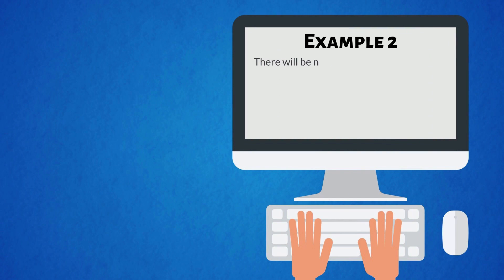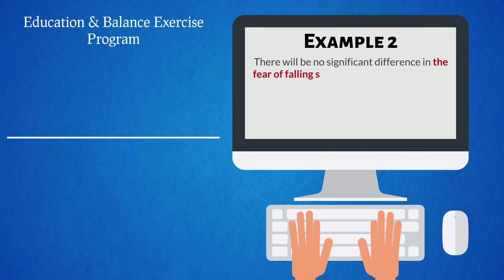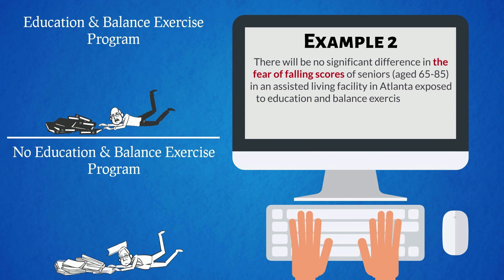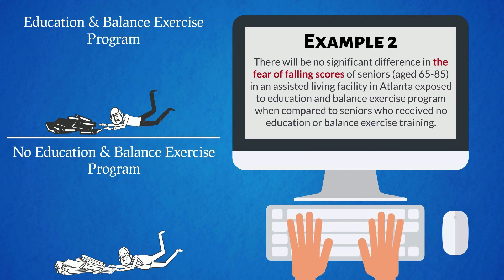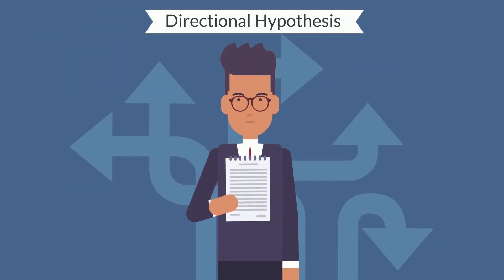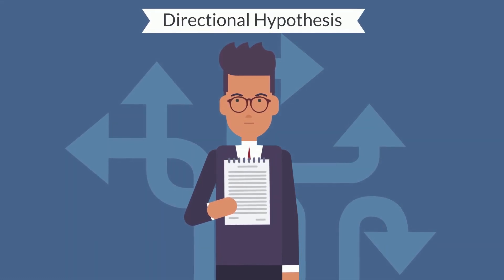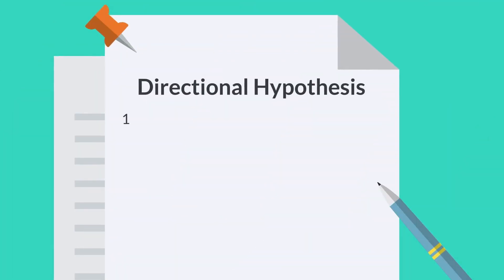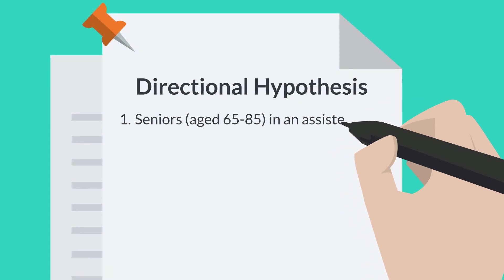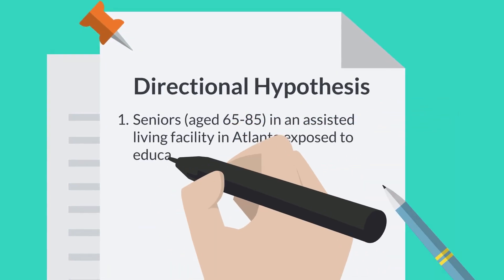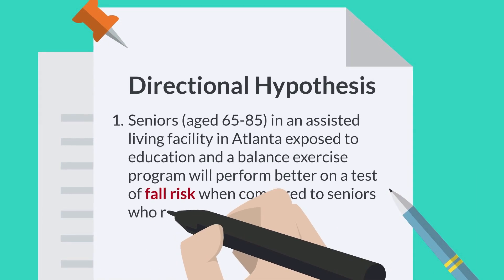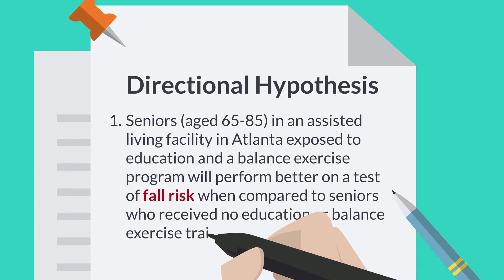Second null hypothesis example: there will be no significant difference in the fear of falling scores of seniors aged 65 to 85 in an assisted living facility in Atlanta exposed to education and a balance exercise program when compared to seniors who received no education or balance exercise training. A directional hypothesis — also called a one-tailed hypothesis — states the direction of the difference or relationship. For example: seniors aged 65 to 85 in an assisted living facility in Atlanta exposed to education and a balance exercise program will perform better on a test of fall risk when compared to seniors who received no education or balance exercise training.